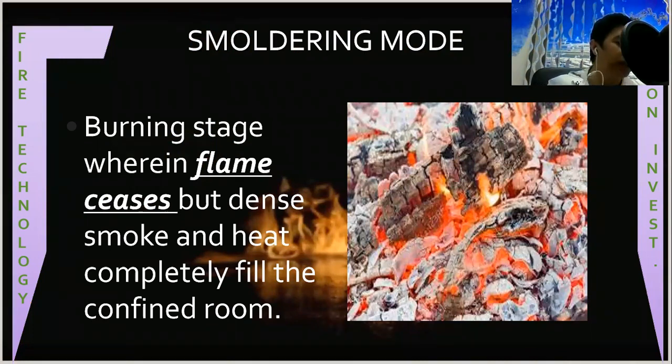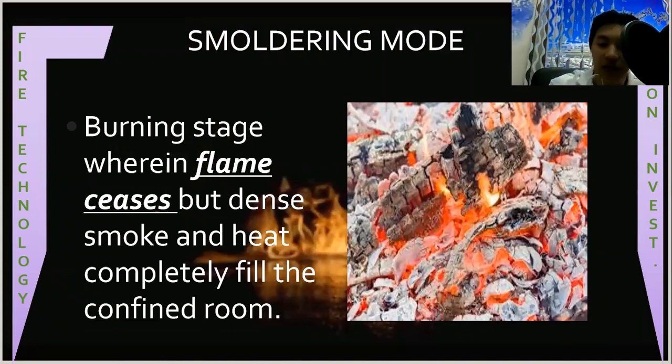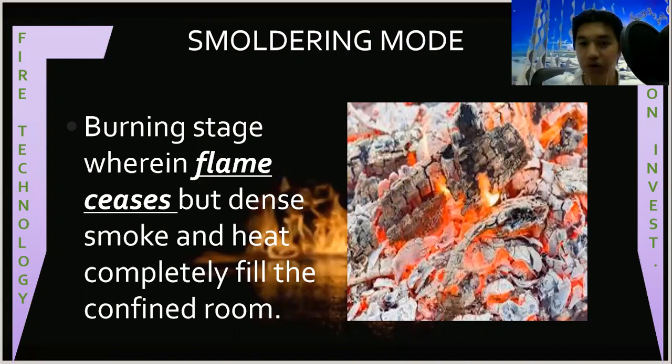It is represented by the fire triangle, with three sides representing fuel, temperature, and oxygen. The characteristics of the smoldering mode: flames may die and leave only glowing embers or superheated fuel under pressure with little oxygen.